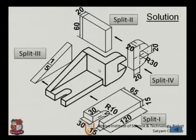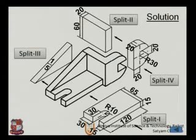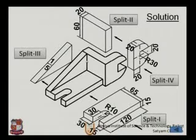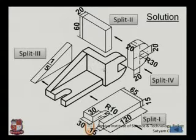Here we have the complete solution. We split the component because this isometric drawing is complex. We divided it into four sections — one, two, three, and four — and simply assembled them in order to create the isometric view. This was the third method for constructing the isometric view.